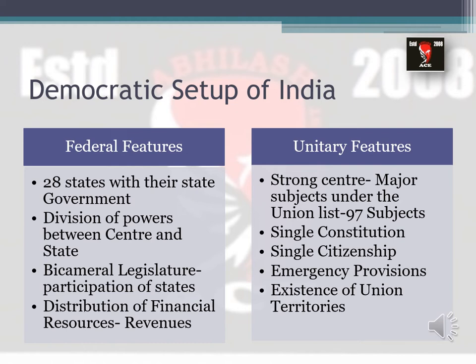Federal features include division of powers between the center and the state — there is no single government that rules the whole nation; instead, powers are divided among state governments. That is why in India different states have their own respective governments working in coordination with the central government. Federal features also include a bicameral legislature, wherein the Union Parliament is subdivided into two houses: Lok Sabha and Rajya Sabha.